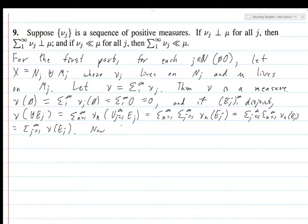Now that we know nu is a measure, note that for all j in the natural numbers mu of E intersect N_j equals 0 and that is because of this mutual singularity thing, mu is null on each of the N_j's.